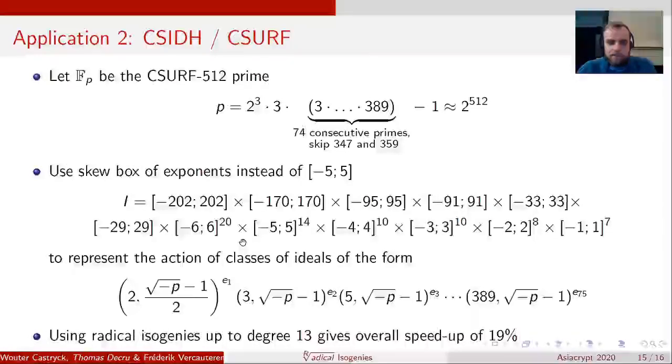Now using radical isogenies like this, we get an overall speedup of about 19% for the CSURF-512 parameter setting. Small remark here though, is that if you go to higher security levels, this speedup will become less, for the simple reason that the small primes have less weight in that setting.